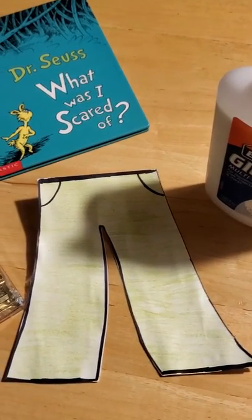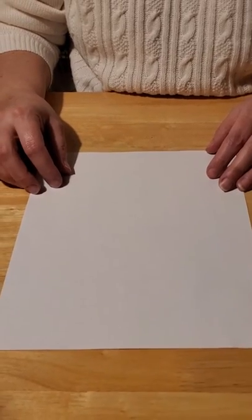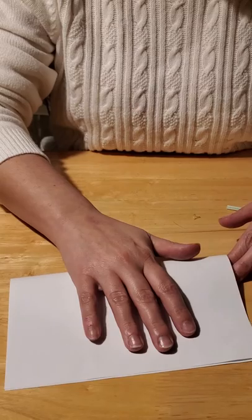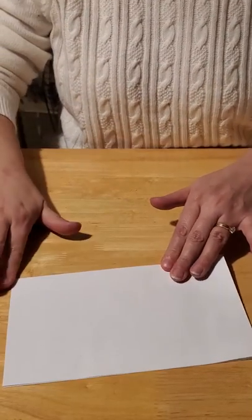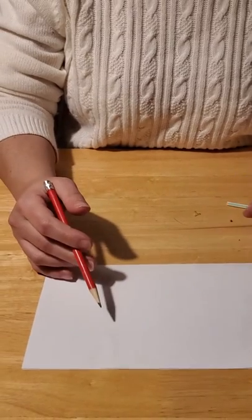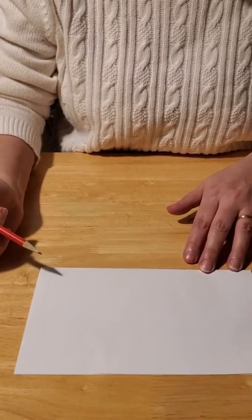Okay, so let's go ahead and get started. Take your sheet of computer paper or whatever paper you have, and fold it in half just like that. Then take your pencil and you're going to free draw the shape of your pants onto your paper.